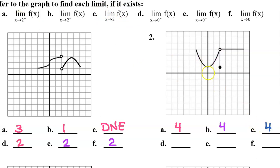Now let's turn our attention to the x value of 0. The limit as x approaches 0 from the left — as we approach 0 from the left we are approaching a y value of 1. The limit as x approaches 0 from the right — as we approach 0 from the right we are again approaching a y value of 1. Because the limit from the left and the limit from the right are the same, the overall limit as x approaches 0 is also 1.